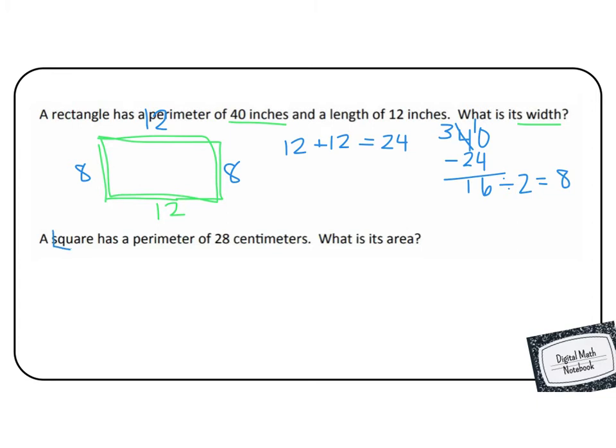A square, ooh, this is important. A square has a perimeter of 28 centimeters. Then they ask us the question here at the end, careful, what is the area? So we have to use the perimeter, but then find the area. The first important word that I saw was that it is a square. So that means that all four sides are equal.